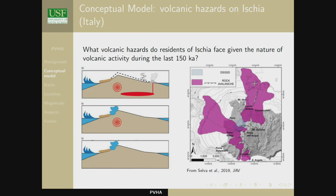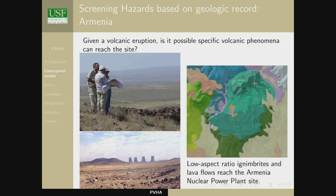Once you've characterized these sources, you screen for hazards. For Armenia, that involves making a geologic map and discovering what products are at the site — low-aspect-ratio ignimbrites, lava flows, and so on. You realize you cannot screen those hazards from consideration. An example from a non-critical facility on the flanks of Colima Volcano: there's the beautiful village of Tonila. The question is, what are the likely impacts of lava flows or other products on Tonila?